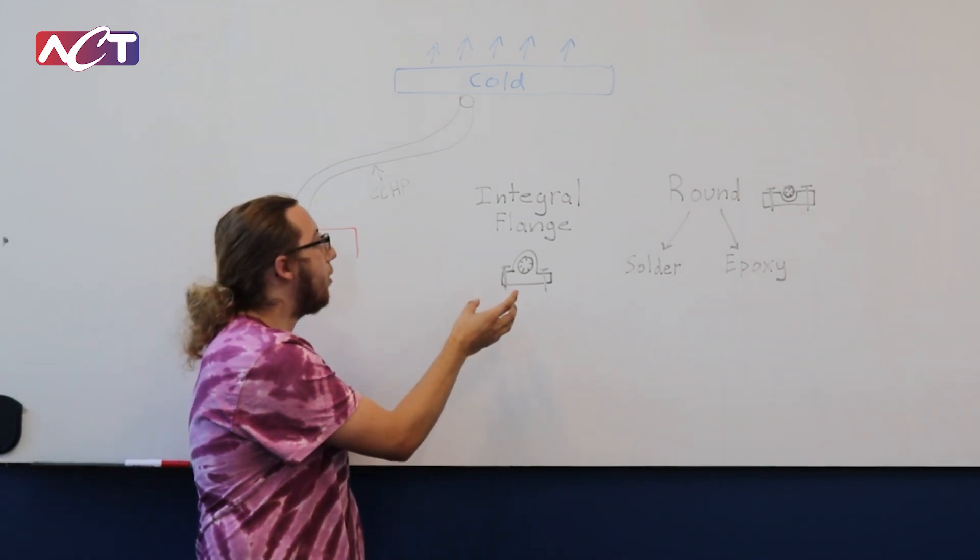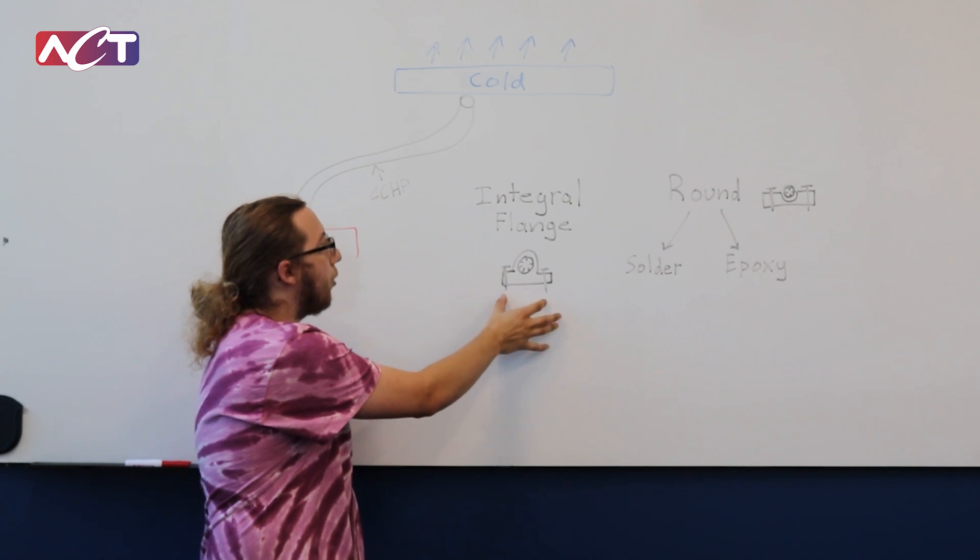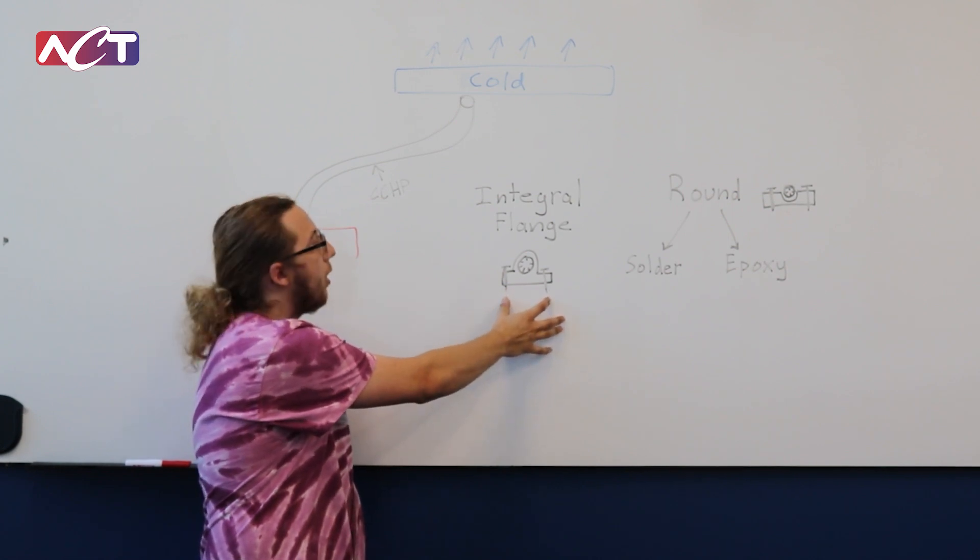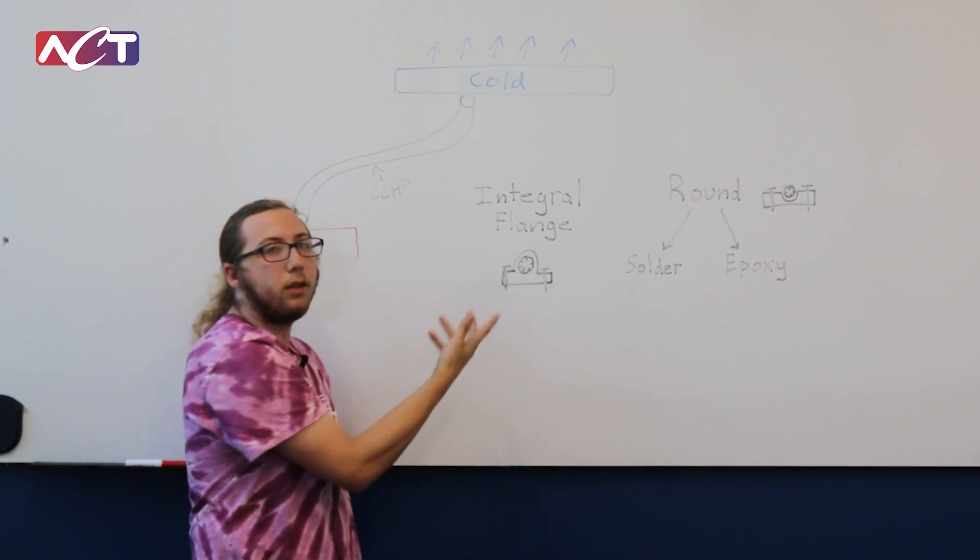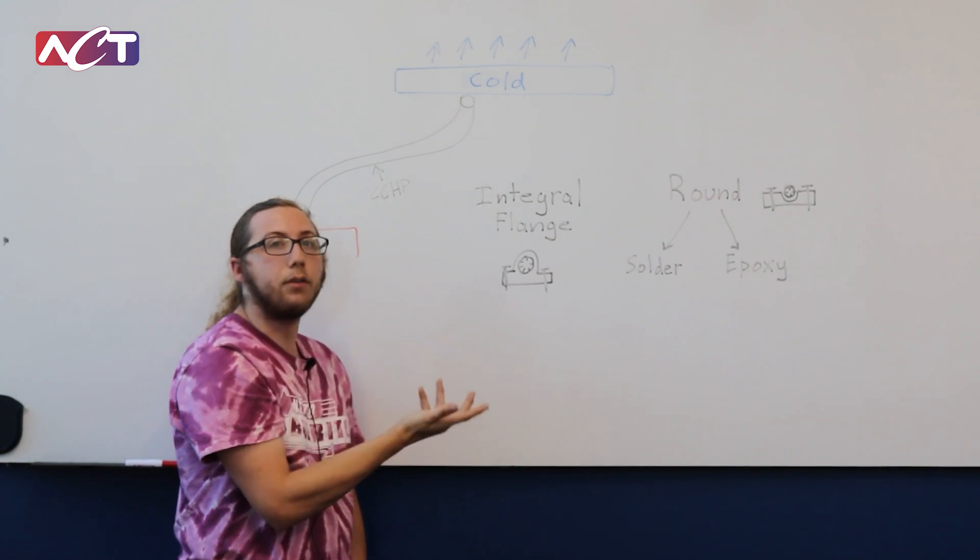So this would be when the flange itself, or the part that you would bolt through, is actually extruded with the aluminum envelope of the CCHP.